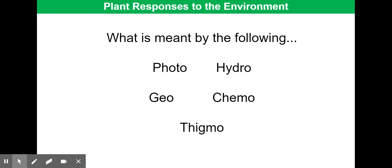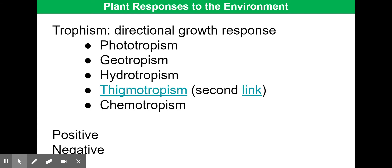Before introducing these different types of plant responses, let's look at some root stem words on the slide. Photo means light, hydro means water, geo means relating to gravity, chemo is chemical, and thigmo is touch. We have a wide variety of different growth responses in plants that we refer to as tropisms.